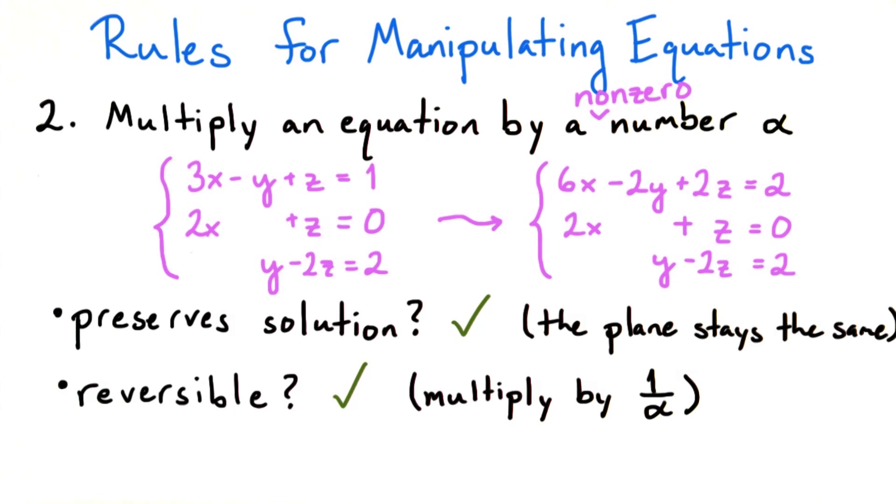Also, since we specify that alpha must be a non-zero number, the operation is reversible, simply by multiplying through by 1 over alpha.